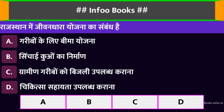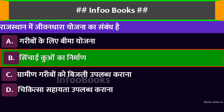राजस्थान में जीवंधारा योजना का संबंध है। Option A: गरीबों के लिए बीमा योजना। Option B: सिंचाई कूपों का निर्माण। Option C: ग्रामीण गरीबों को बिजली उपलब्ध कराना। Option D: चिकित्सा सहायता उपलब्ध कराना। सही विकल्प है: सिंचाई कूपों का निर्माण।